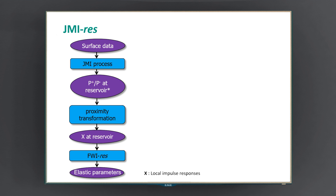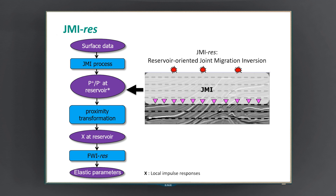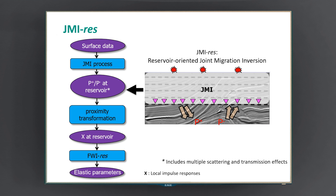Based on this idea, we proposed JMI-RIS, which stands for Reservoir-oriented Joint Migration Inversion. It consists of three main steps. The first step is estimating the up- and down-going one-way wave fields near your target area, using a process called Joint Migration Inversion, or JMI. In JMI, we create wave fields at all depth levels in the subsurface, and most importantly, it accounts for all the multiple scattering present in your data, such that you get wave fields at your reservoir which are free of artifacts due to unexplained internal multiples.